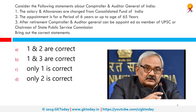Consider the following statements about the Comptroller and Auditor General of India, or CAG. Statement 1: The salary and allowances are charged from the Consolidated Fund of India. Statement 2: The appointment is for a period of six years or up to the age of 65 years. Statement 3: After retirement, the Comptroller and Auditor General can be appointed as member of UPSC or chairman of the state public service commission. Which of these statements are correct?